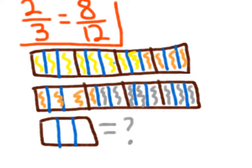So 2 thirds could also equal 8 twelfths. So here are still my two bars and my little remaining. So now I want to make them into twelfths.